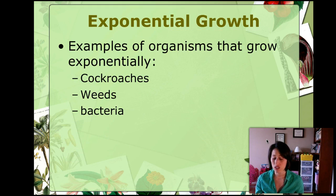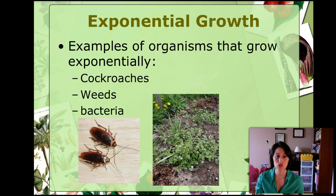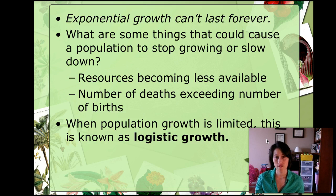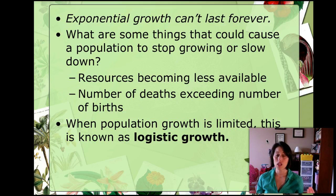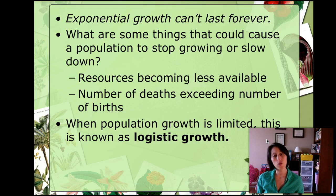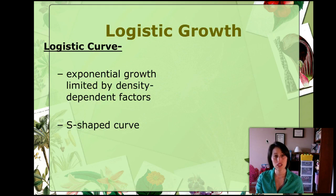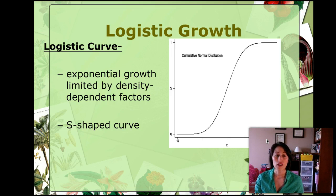Cockroaches, weeds, and bacteria all show exponential growth, but exponential growth can't last forever. Things cause a population to stop growing when resources become less available. Once there's a huge increase in population, organisms start competing for resources, and the environment can't sustain that many. When deaths exceed births, that slows population growth. When growth is limited, we call this logistic growth — it's logical that an environment can't sustain an unlimited number of organisms.